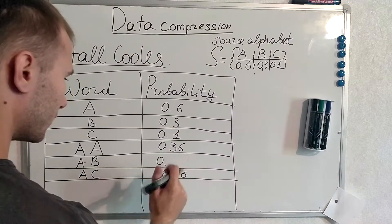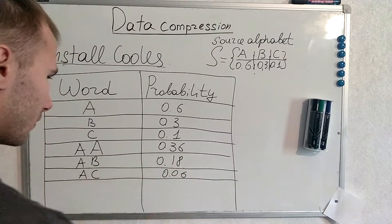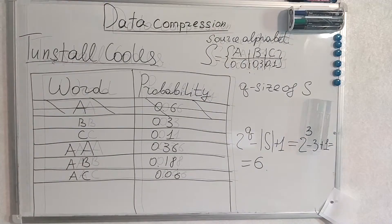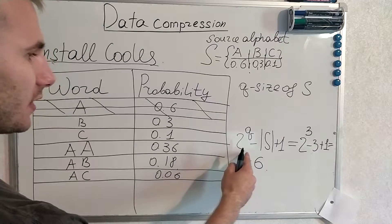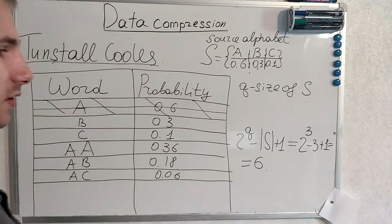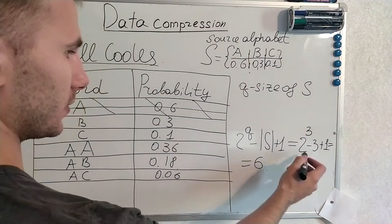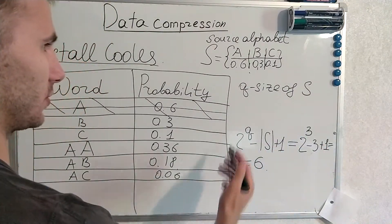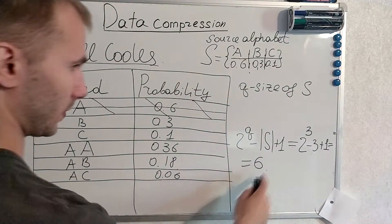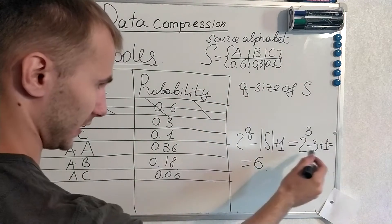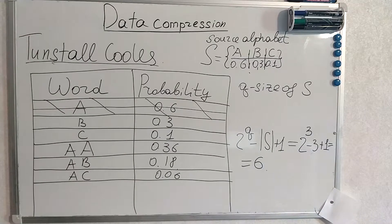I made a mistake here. We also define the size of our table by calculating this expression: 2 to the power of Q, where Q is the size of S, minus the size of S plus one. So it will be 2^3 minus 3 plus 1, which equals 6. The size limit of our table is 6.